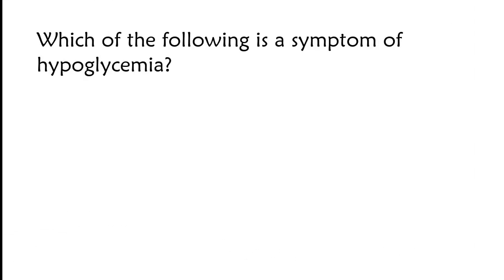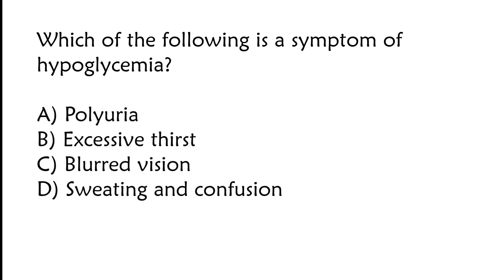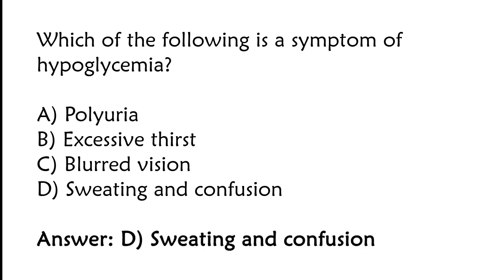Which of the following is a symptom of hypoglycemia? Options: polyuria, excessive thirst, blurred vision, or sweating and confusion. The correct answer is option D: sweating and confusion is a symptom of hypoglycemia.